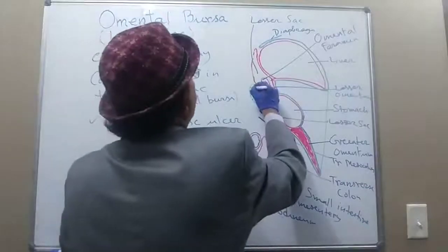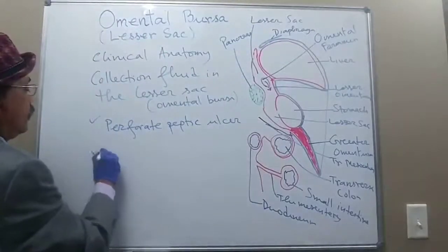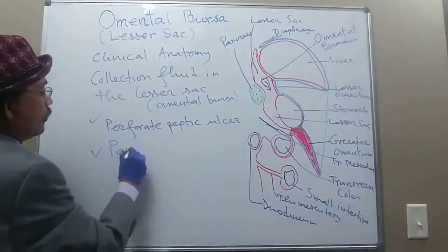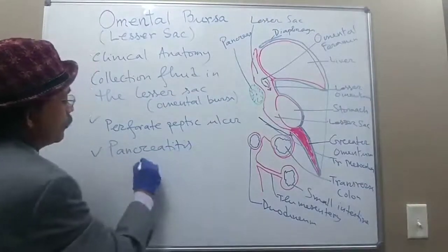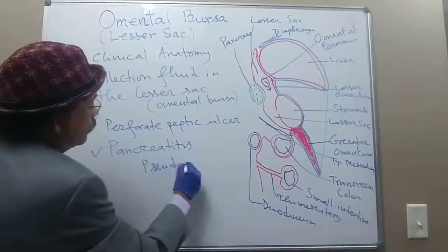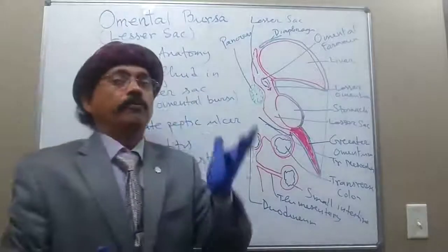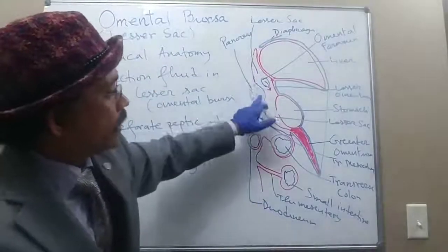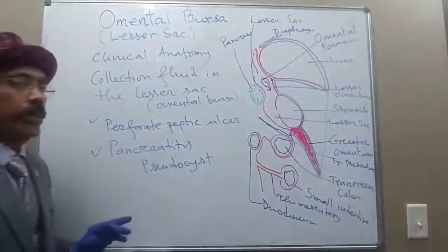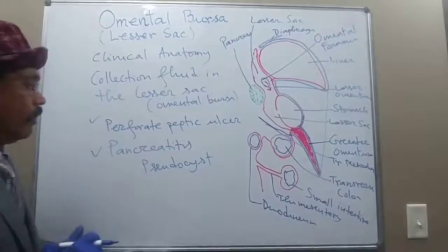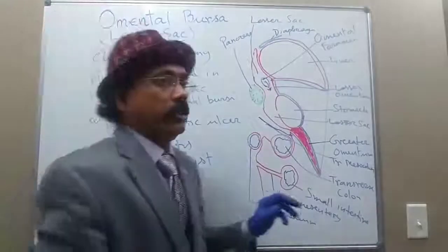Another way fluid may be collected is due to pancreatitis. Due to pancreatitis affecting the pancreas, we may develop a pseudocyst — it is called a pseudocyst because there is no true capsule formation. There will be collection of fluid and inflammation, so there may be a pseudocyst in the lesser sac.